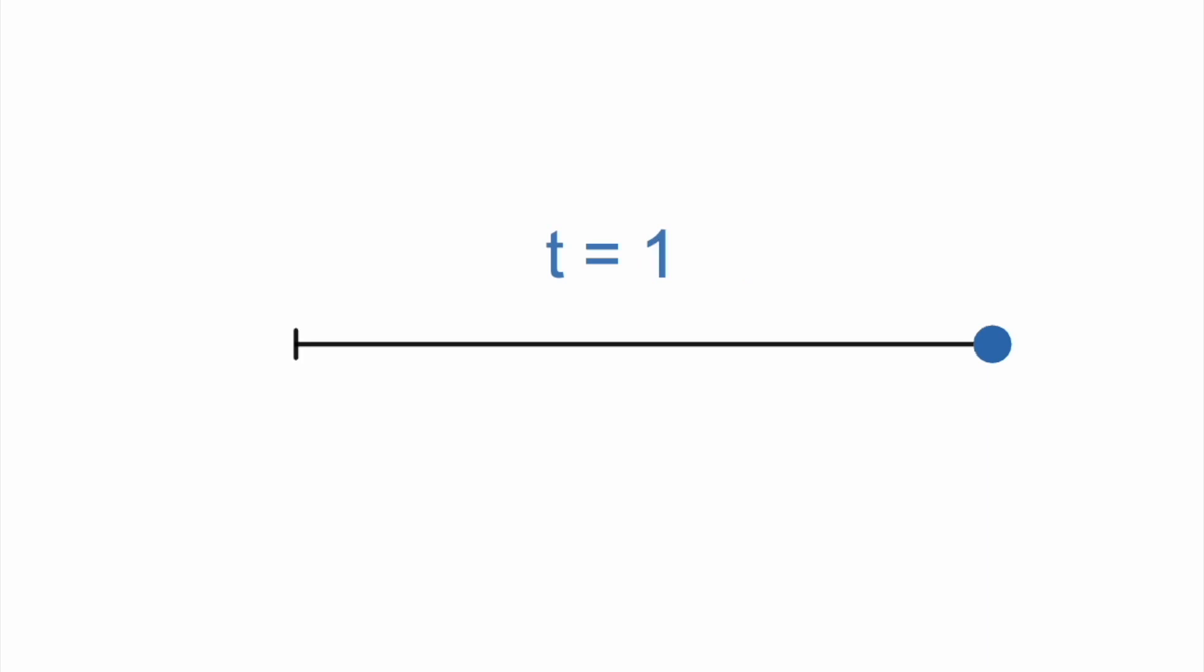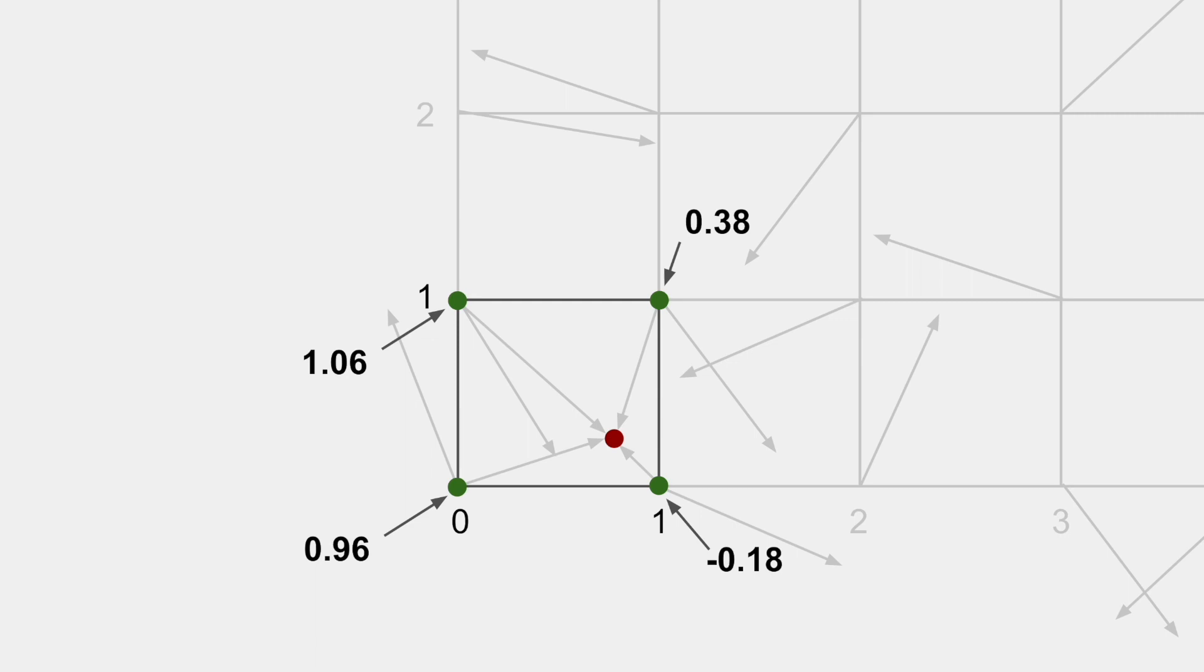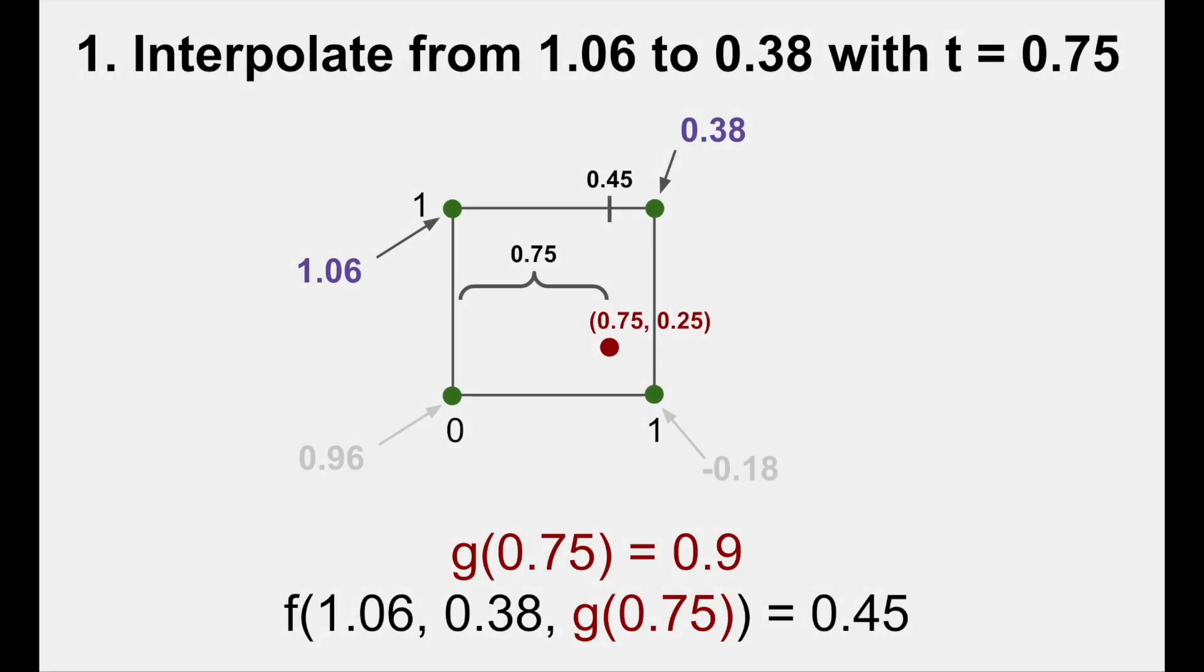Now to apply this interpolation to the four dot products we got earlier. The first step in determining a single value from these dot products is to interpolate the top two values. The value of t will be the distance from the x value of the top left corner to the x value of the target point. That sounded confusing, but just pause the video and look at this visual.